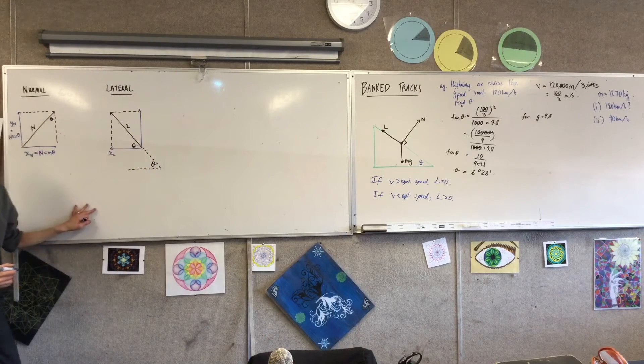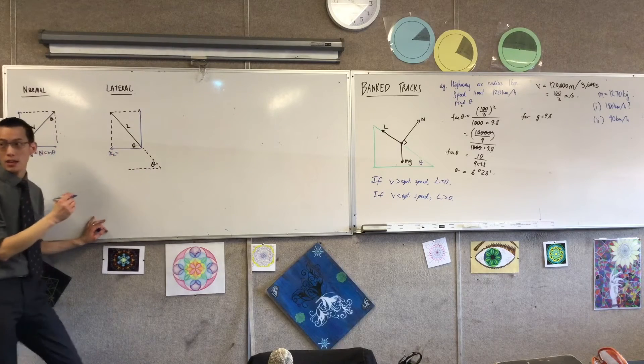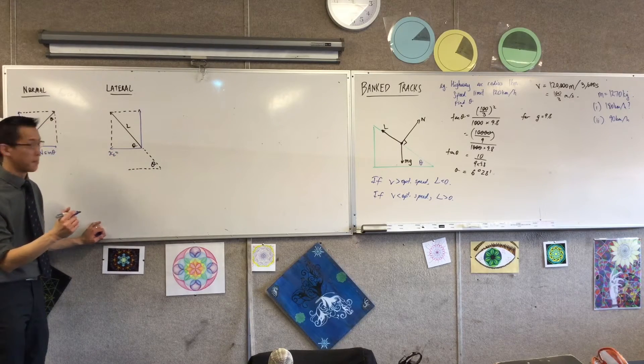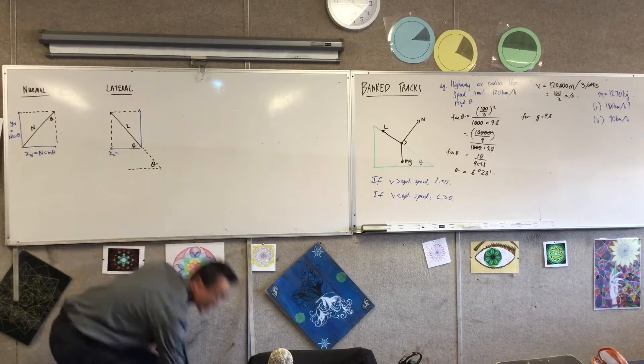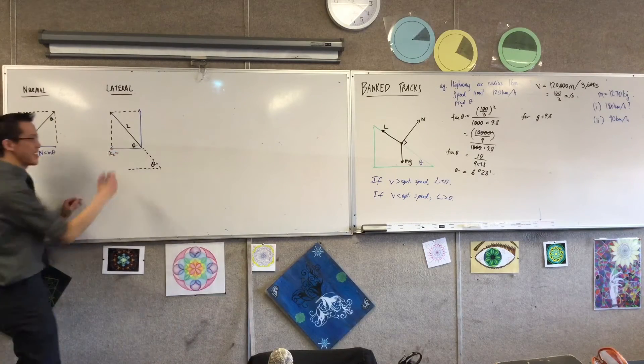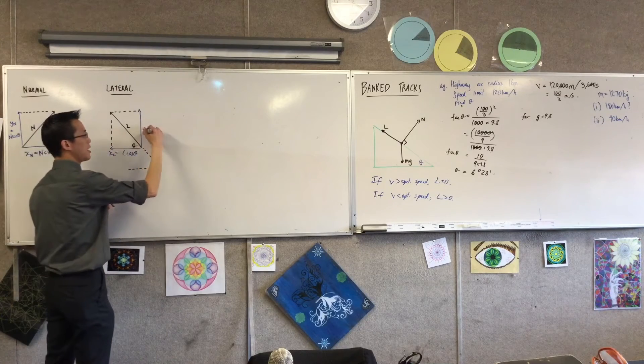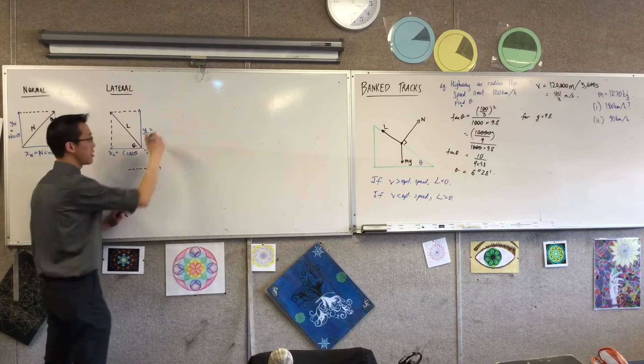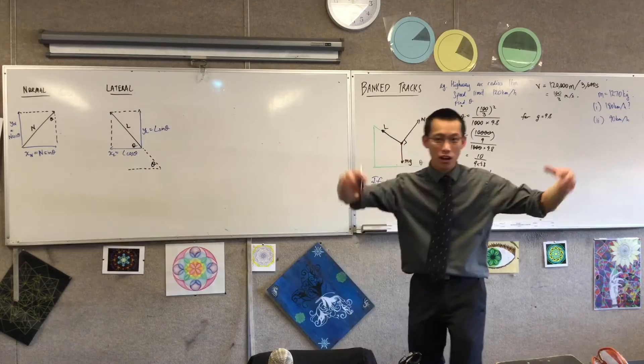So therefore the horizontal part of my friction force, my lateral force, is going to be the adjacent side here, so that's L cos theta. And then your vertical component over here is going to be L sin theta. Very good, fantastic.